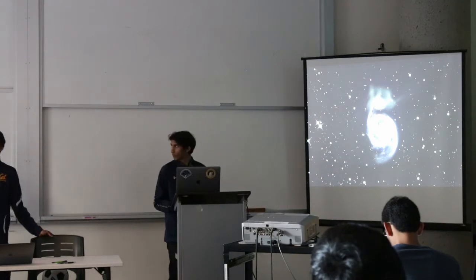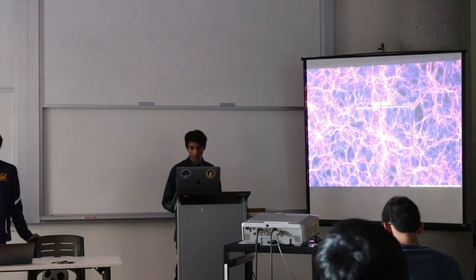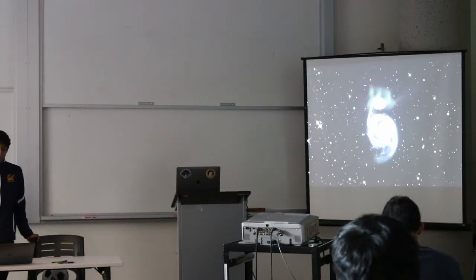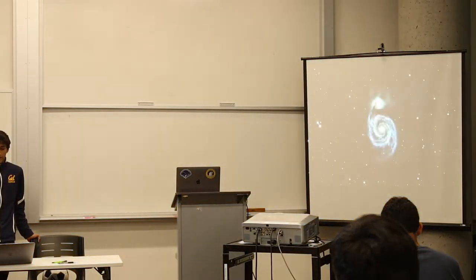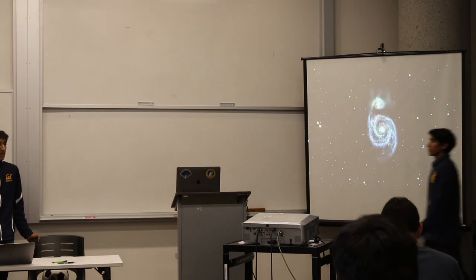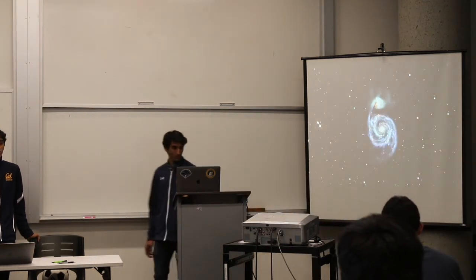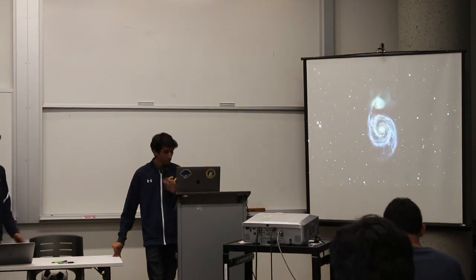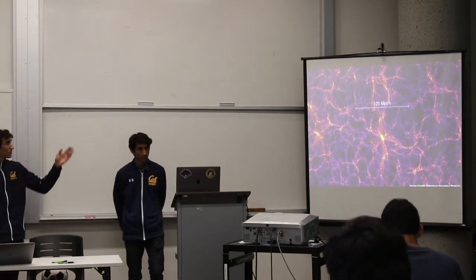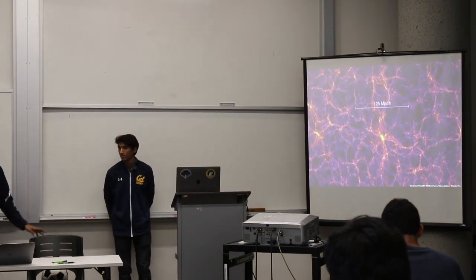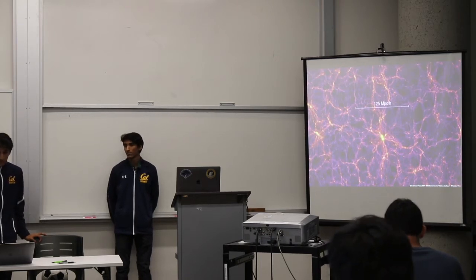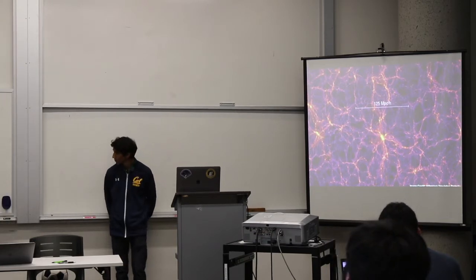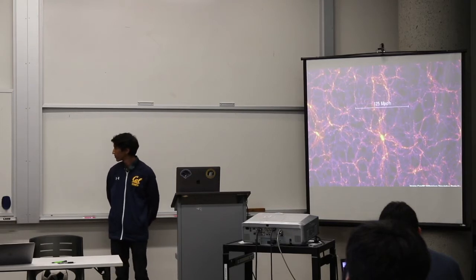The Virgo supercluster has around 100 galaxies, and the Milky Way and Andromeda are the giants. Zooming out still further, there are on the order of 10 million such galaxy superclusters in the universe. On the largest scales, the galaxies arrange themselves in filamentous structures. Importantly, on the largest scales of the universe, the universe is homogenous and isotropic.